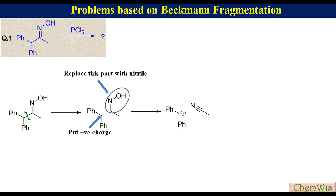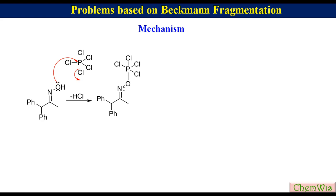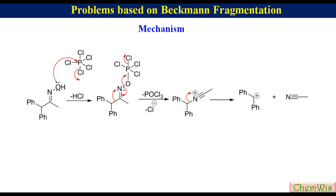Since this cation cannot undergo elimination, it will react with the in-situ generated chloride ion to produce chlorodiphenylmethane. The full mechanism involves attack of the hydroxyl group on PCl5, which eliminates HCl and leads to the formation of the oxime derivative with a better leaving group. The leaving group departs as POCl3 and chloride ion. The diphenylmethyl group migrates to nitrogen, leading to the formation of the nitrillium ion. This C-N bond breaks to generate diphenylmethyl cation and acetonitrile, and the chloride ion attacks the carbocation to produce chlorodiphenylmethane.